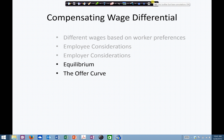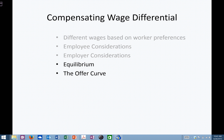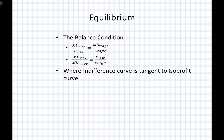In this final segment on compensating wage differentials, we'll look at the equilibrium condition and what's referred to as an offer curve. At the very end of the last segment on employer considerations, I gave you a glimpse into the equilibrium condition. If we're thinking about equilibrium, we're thinking about where the indifference curve for the employee and the isoprofit curve for the firm are tangent to one another — the point at which they're equal.